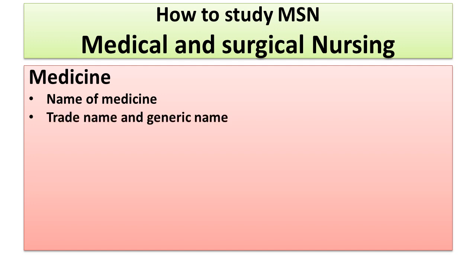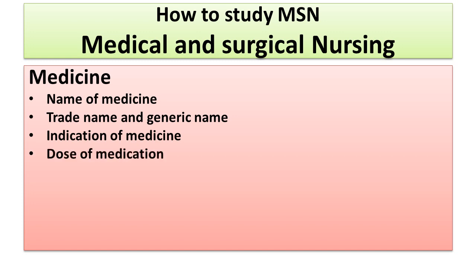There are two types of names for any medicine: one is called the trade name or company name, and the second one is called the generic name. Another thing you should know about medicine is the indication — that is, in which circumstances you have to give the medicine to your patient — and what is the correct dose of the medicine.